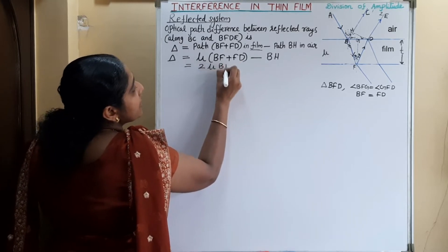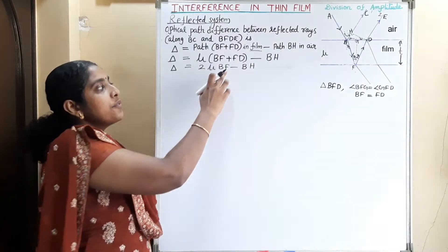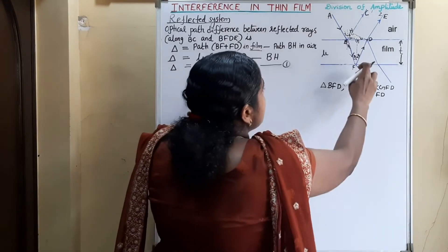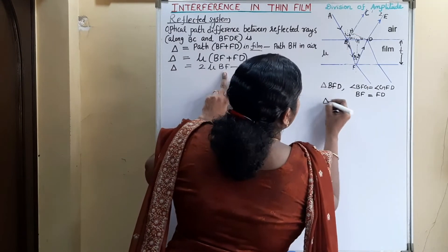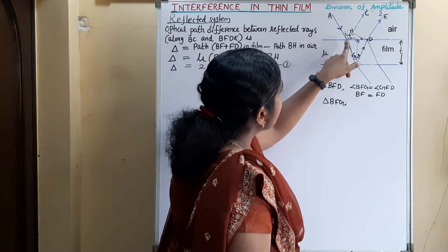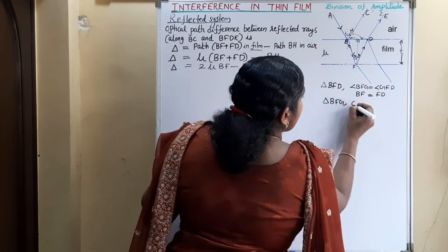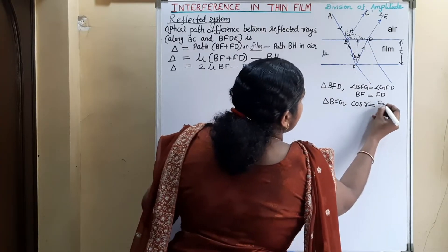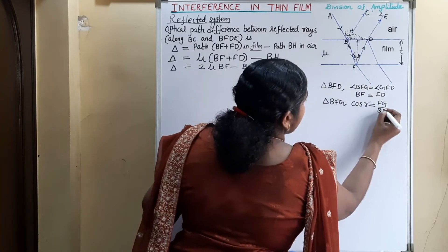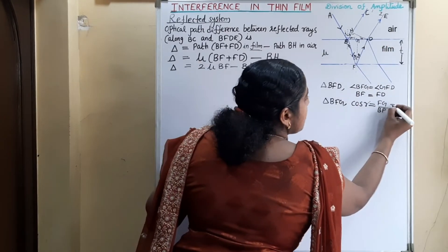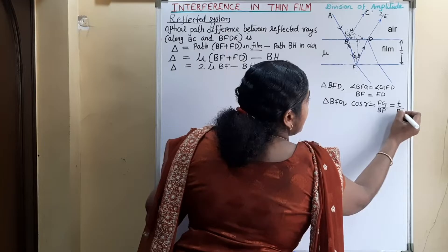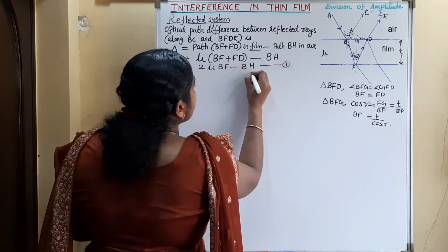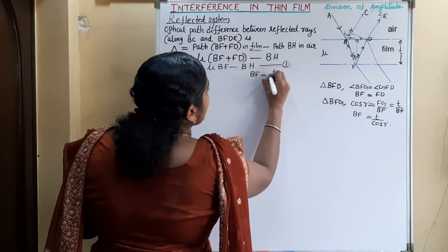To find BF, consider triangle BFG. In this triangle, BF is the hypotenuse. So we take cos R: cos R equals adjacent side FG divided by BF. FG is the thickness of the film T, so cos R equals T divided by BF. Therefore BF equals T divided by cos R. Write this as equation 2.